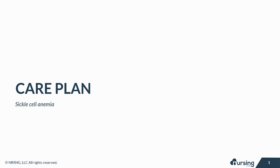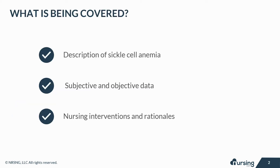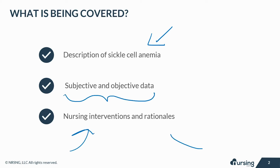Let's take a look at the care plan for sickle cell anemia. In this lesson, we'll briefly take a look at the pathophysiology and etiology of sickle cell anemia. We're also going to take a look at additional things included in this care plan, like subjective and objective data, as well as nursing interventions and rationales.